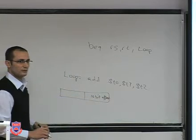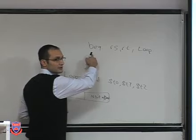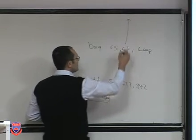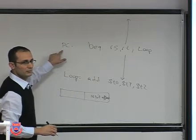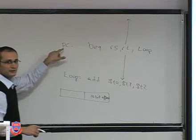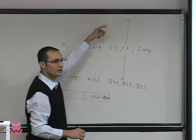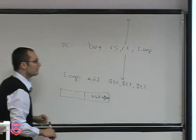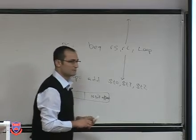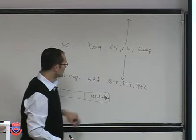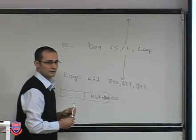We use this offset to calculate where we are going to jump within the branch instruction code. If you look at this branch instruction example, this is the base address that we are using — this is the PC, the program counter. It indicates which instruction we are executing right now. Using this offset, which could be negative or positive, you can move up or down in the instruction sequence. Once you have this offset, what we do is append two zeros at the end. Why do I append these two zeros to this 16-bit offset?